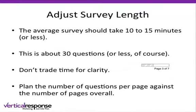Adjust your survey length — having it go on really long is a problem. You want it to be about 10 minutes or less, and if you can do less, that would be better. This is about 30 questions, but these are 30 basic questions — if you have long, complicated questions, you definitely want fewer than 30. Also plan the number of questions per page against the number of pages overall. If you have 30 questions on just two pages, people are going to feel like it's never going to end, so try to balance how many pages there are since people can usually see how many pages are left.